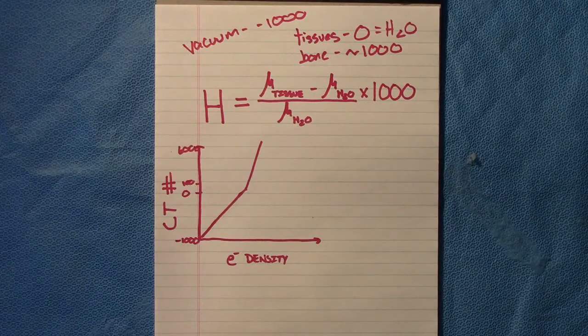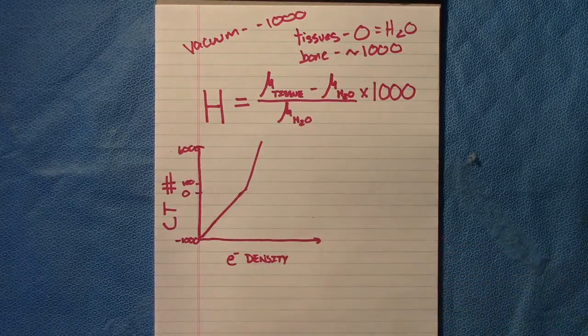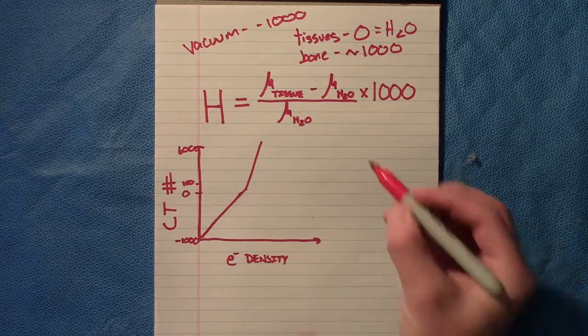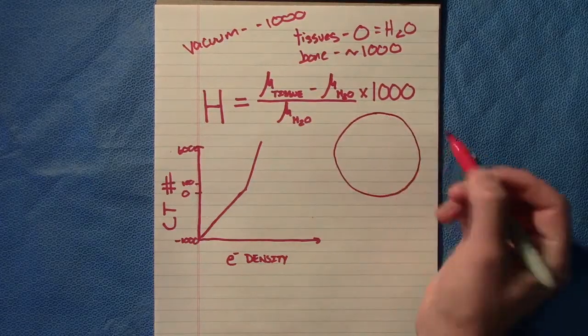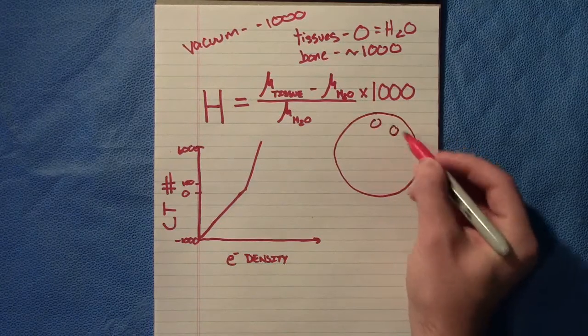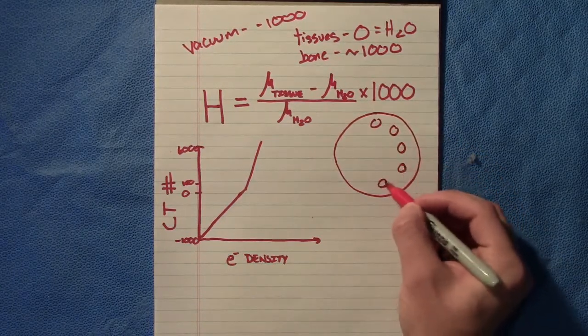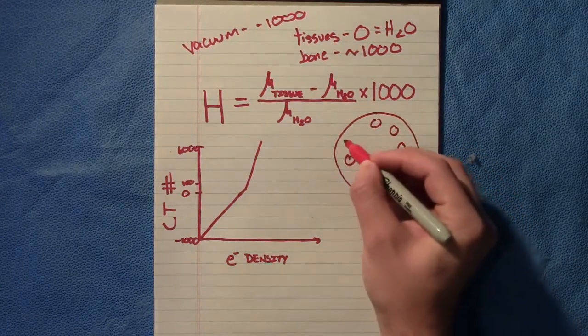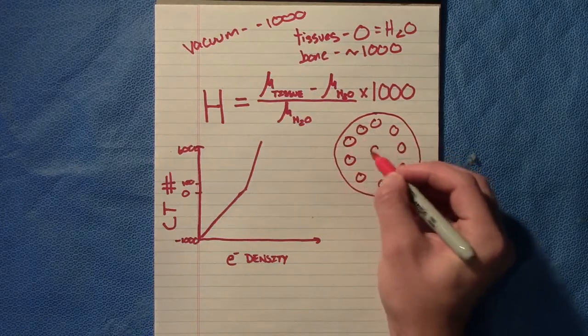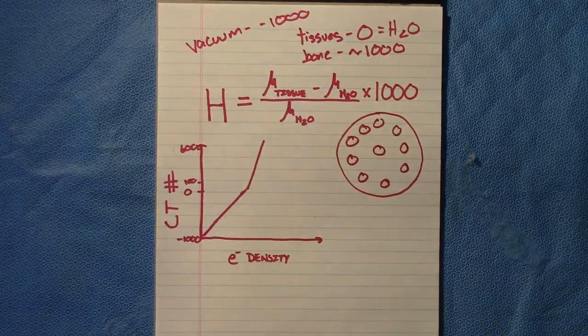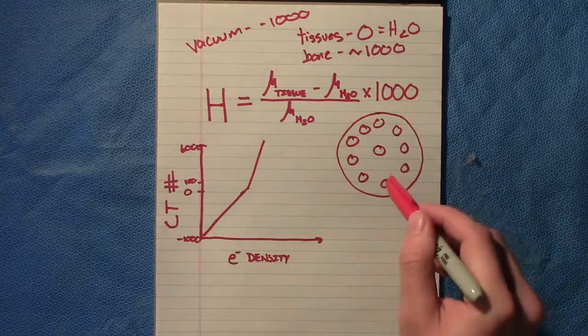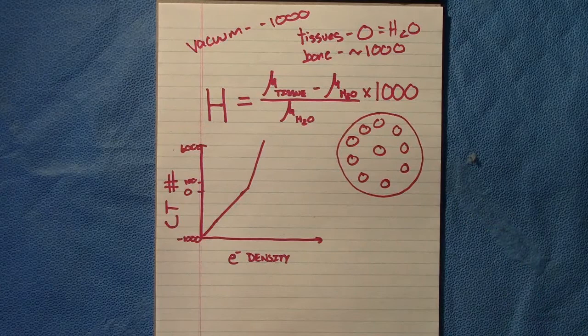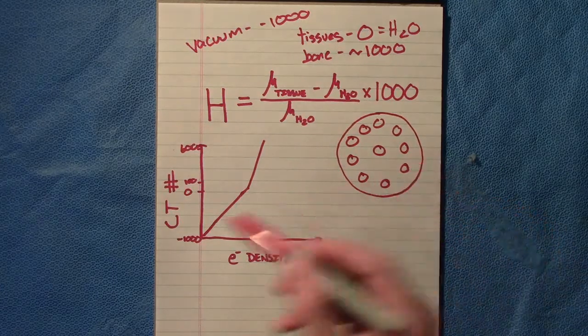At this point we've scanned a phantom, and that Gammex phantom is just a circular phantom like this, and it has a bunch of plugs in it. All these plugs—PMMA, acrylic, water, bone—there's just all types of different plugs and materials that they know the electron density of.